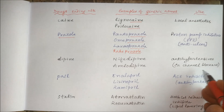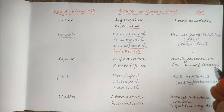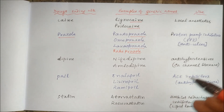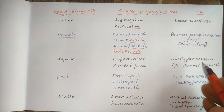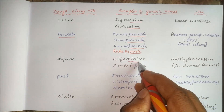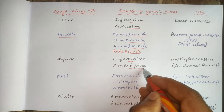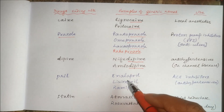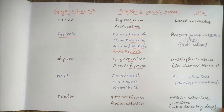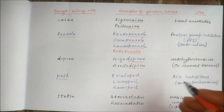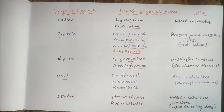Calcium channel blockers — the dihydropyridines used as antihypertensives and vasodilator drugs — end with '-dipine': for example, nifedipine, amlodipine. Similarly, the antihypertensive ACE inhibitor drugs — enalapril, lisinopril, ramipril — all end with '-pril'. They are ACE inhibitors: angiotensin converting enzyme inhibitors.